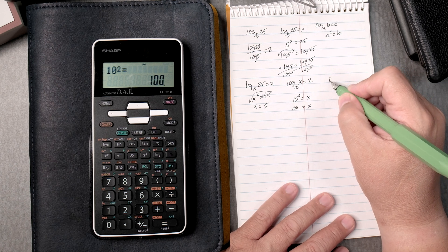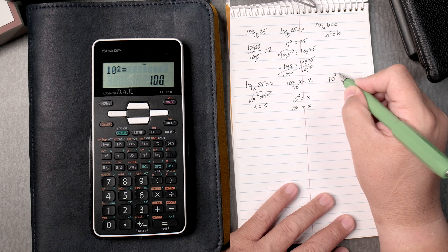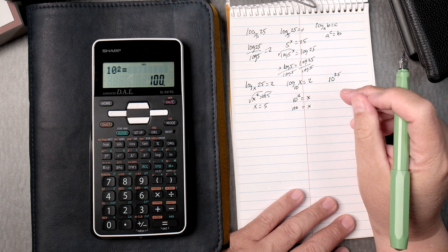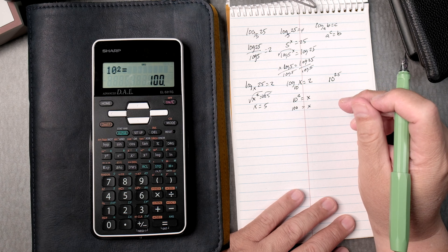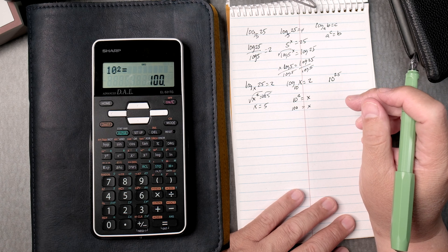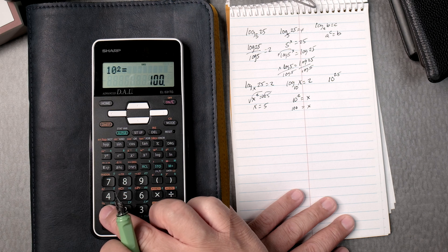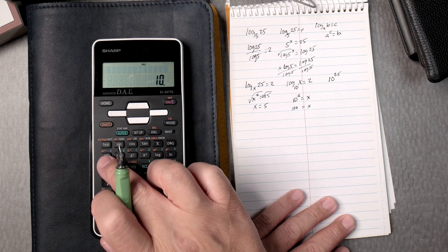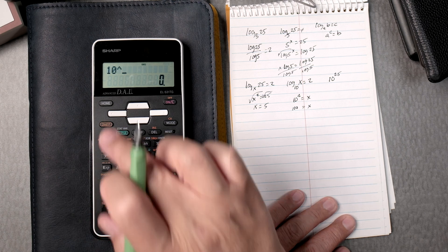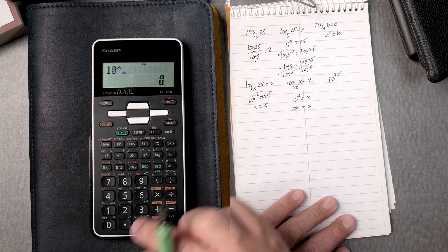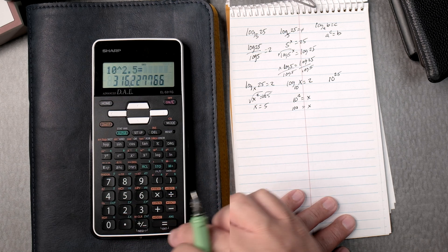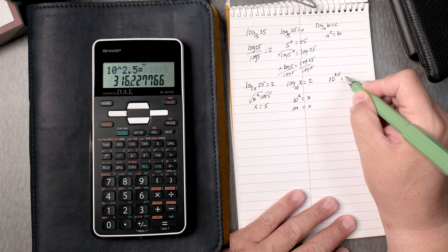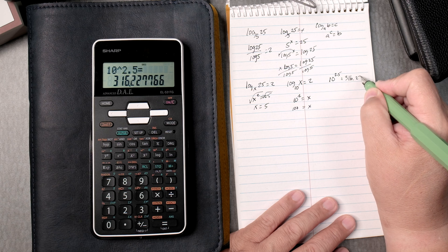How about anti-logs? 10 to the 2.5. So one thing we can do, we can type in, I believe, 10, y to the x, and you can see 10 carat 2.5 equals, that's going to be 316.2277.